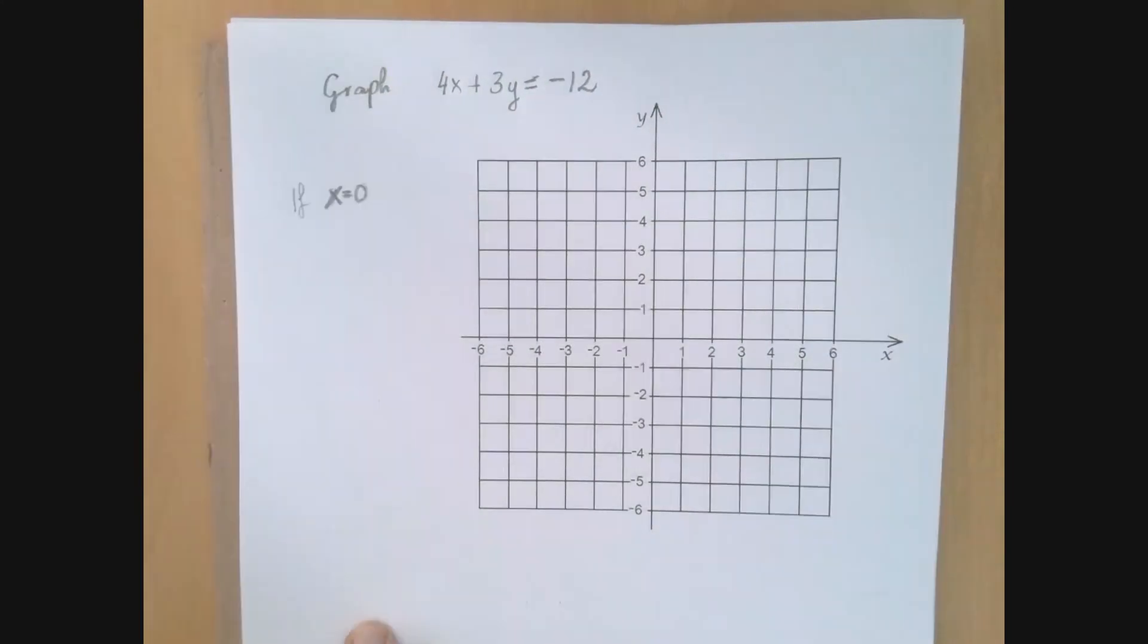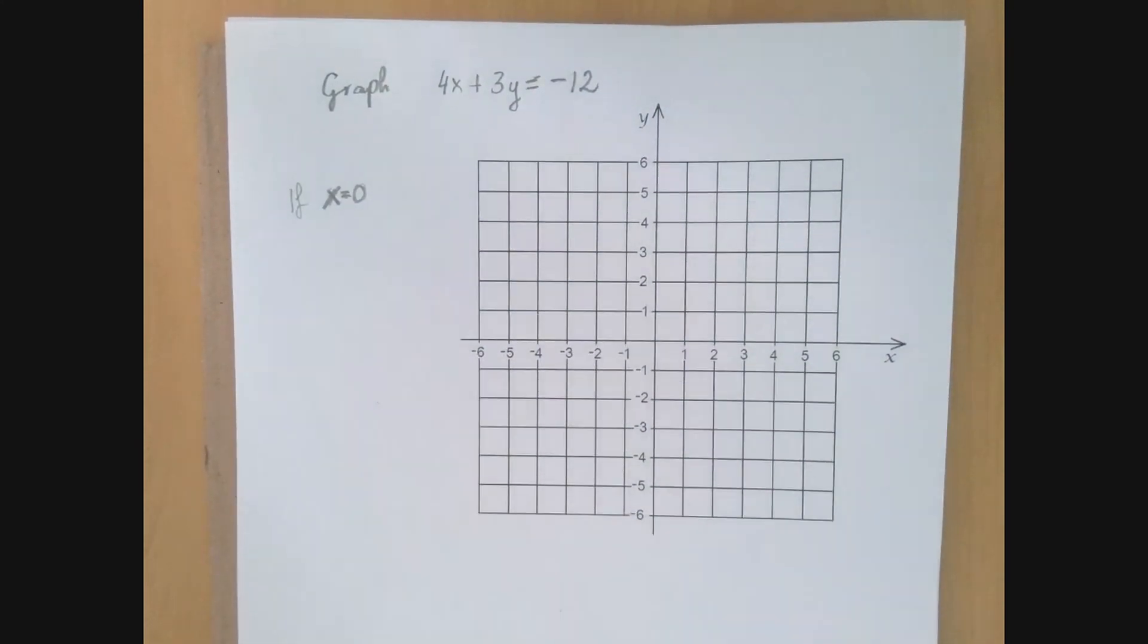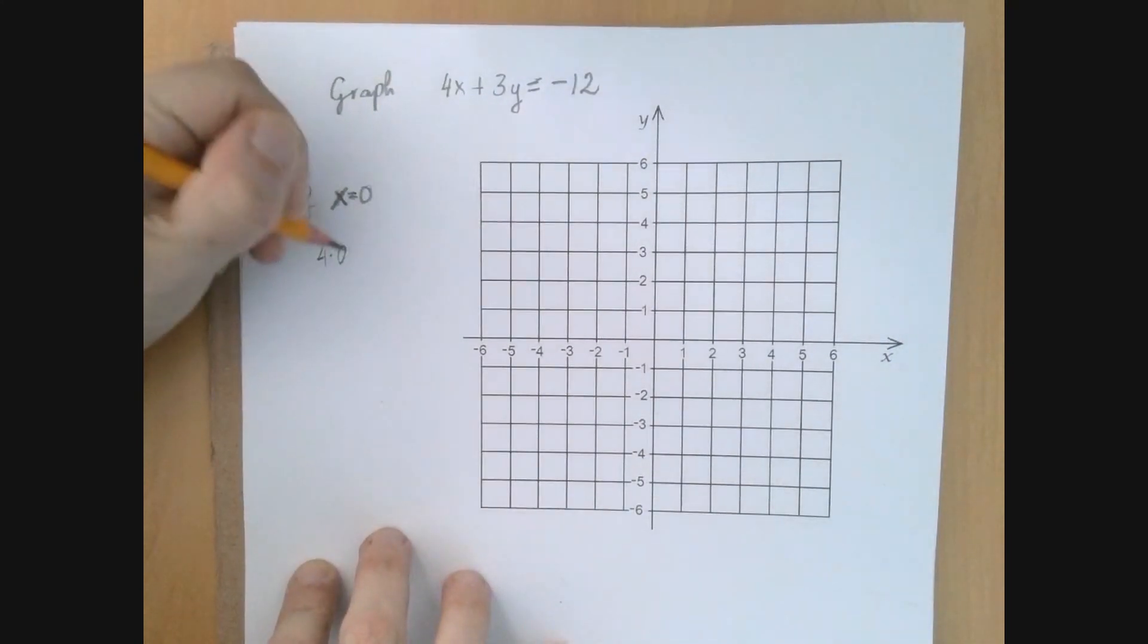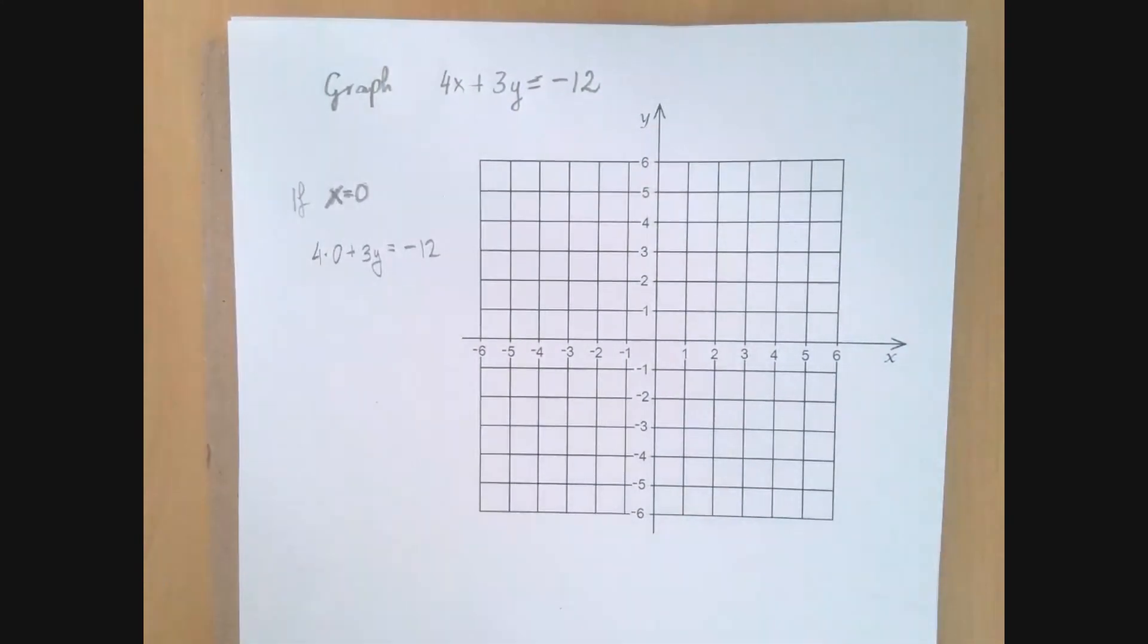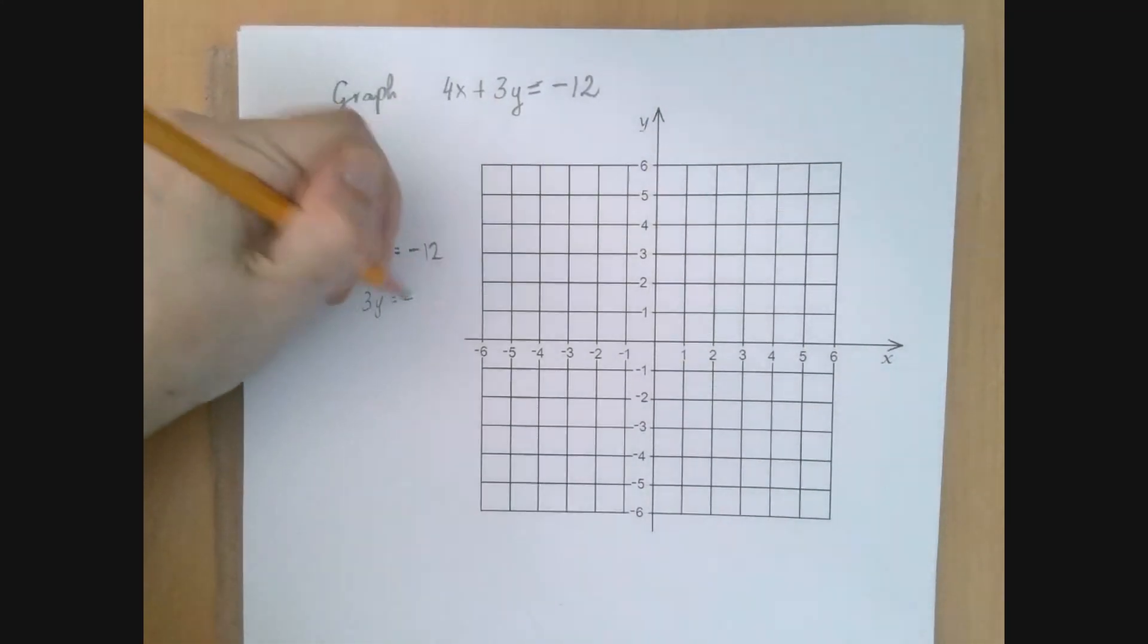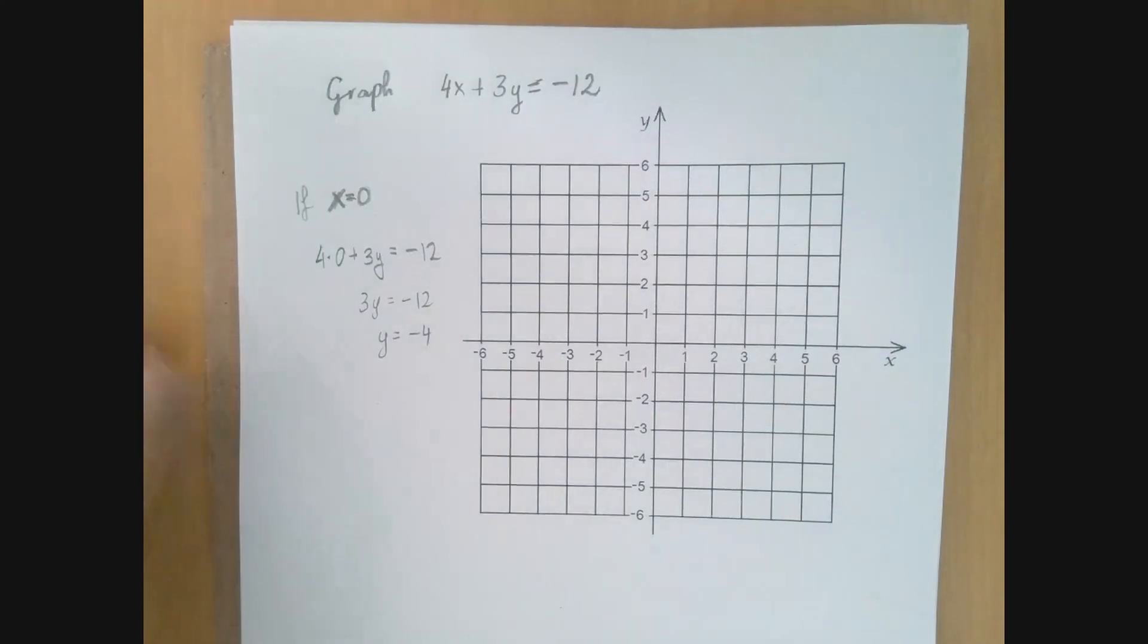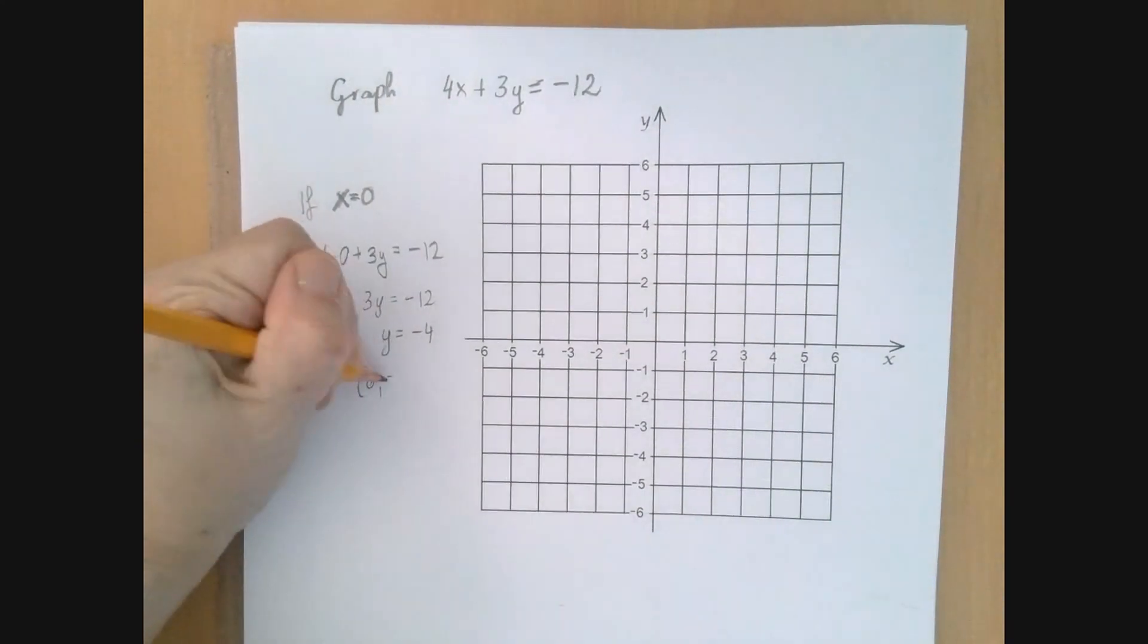Say x is 0. If x is 0, then instead of 4x plus 3y equals negative 12, we're going to write 4 times 0 plus 3y equals negative 12. And no matter what number we use for x, now this is a linear equation in just one variable y, so we can solve for it. In this case, 3y equals negative 12, so y is negative 4. So we found a point (0, -4). If x was 0, y turned out to be negative 4.